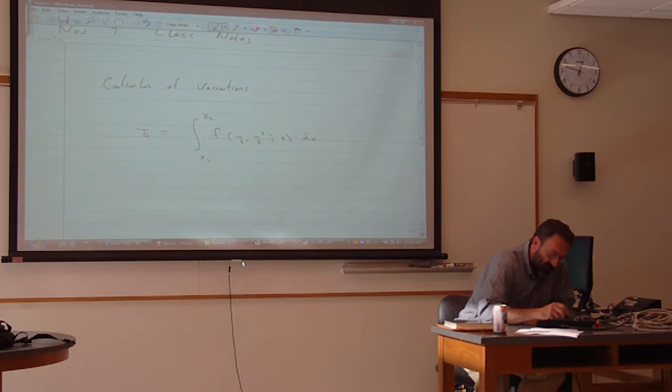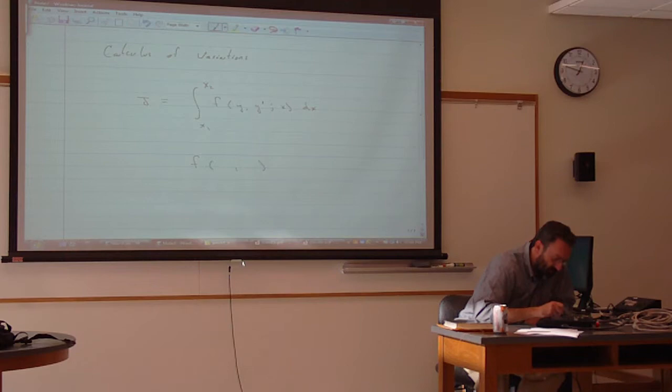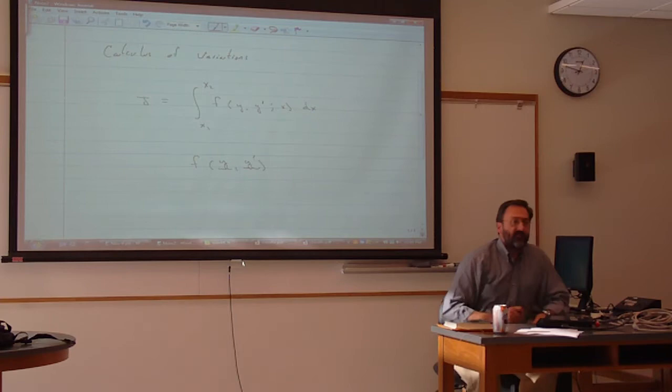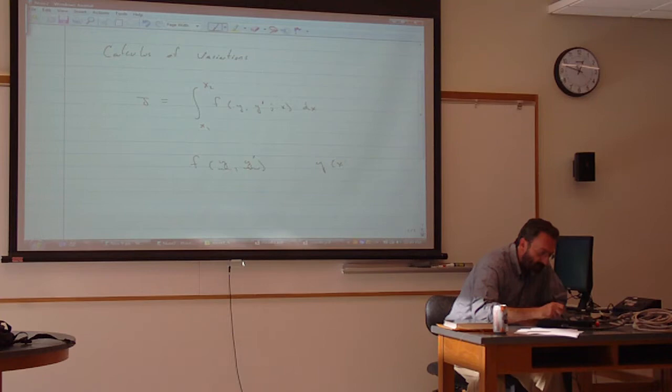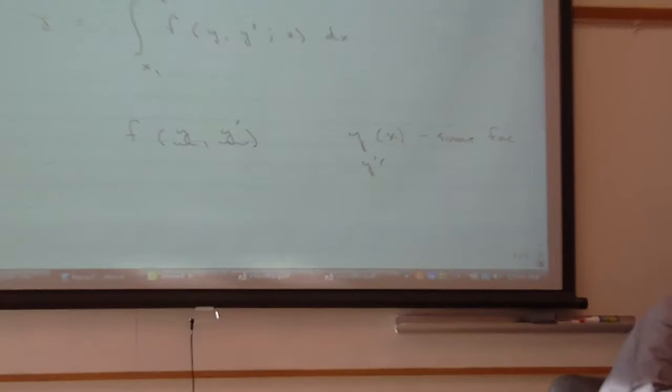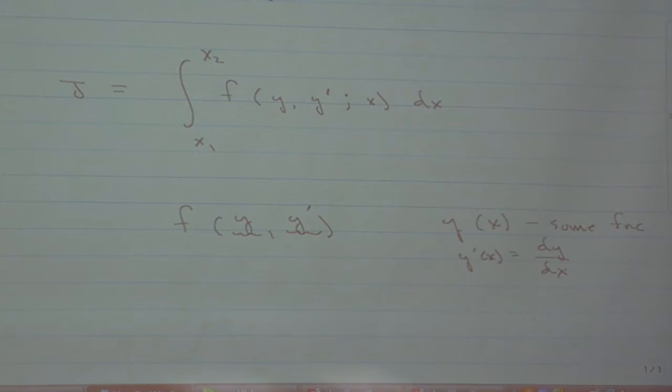Let's start off by having some function f which depends on two things. The slots — the two things that f depends on — I am calling y and y prime. y here means y of x, some function. And y prime means dy/dx. So, for example, this function f that I am thinking of might be 3y minus y prime over y. That is my function f.